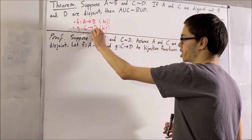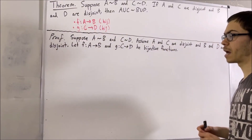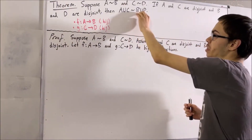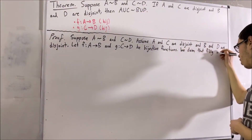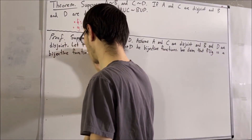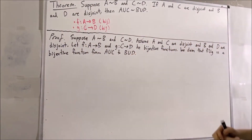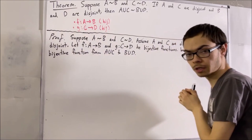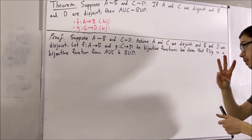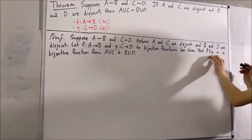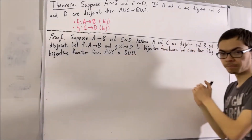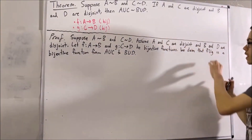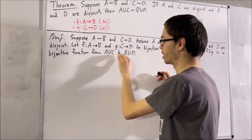I've just written those functions up here for safekeeping. The claim is that F∪G is a bijective function from A∪C to B∪D. We're going to prove this in a three-step process: first, we'll show F∪G is a relation from A∪C to B∪D; then we'll show F∪G is a function; and finally, we'll show F∪G is a bijective function from A∪C to B∪D.